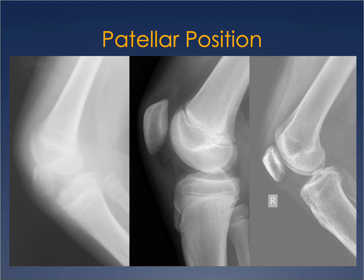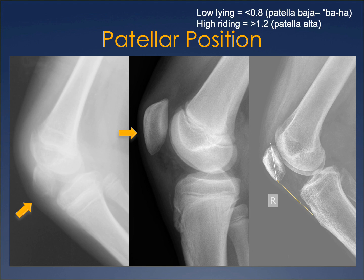Next we look at patellar position — whether the patella is low-lying (patella baja) or high-riding (patella alta). We do this by drawing a line measuring the length from the inferior pole of the patella to the tibial tuberosity, then comparing it to the actual length of the patella itself. Normally these two numbers should fall within twenty percent of each other. Patella baja is spelled B-A-J-A but pronounced 'baha' — it's a Spanish word. These positions can be responsible for patellofemoral symptoms.